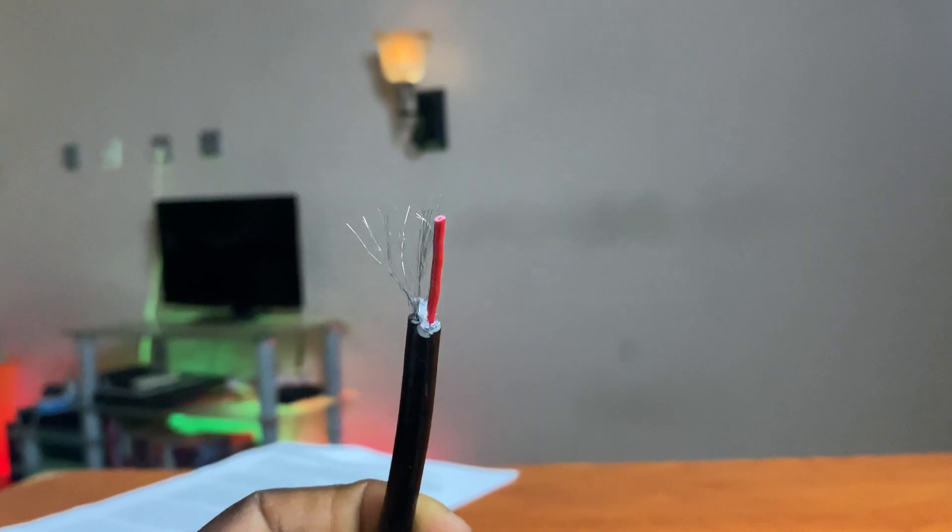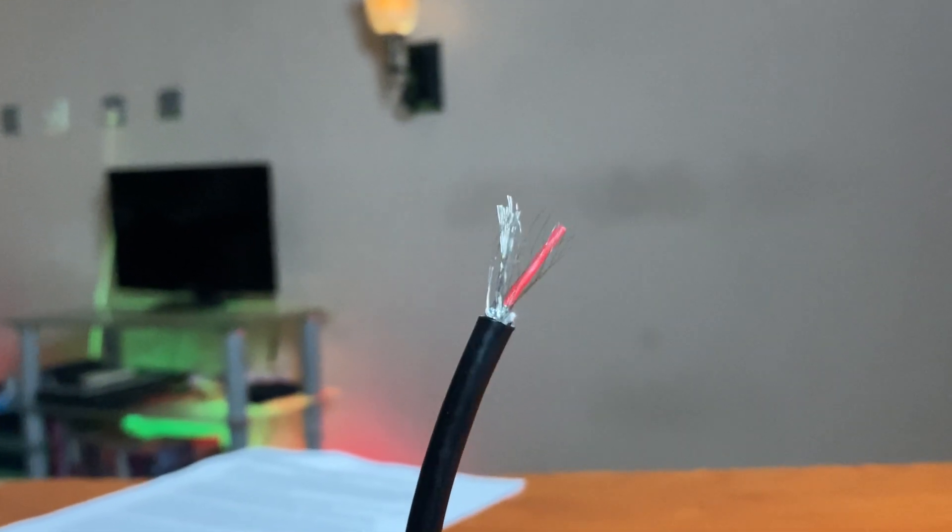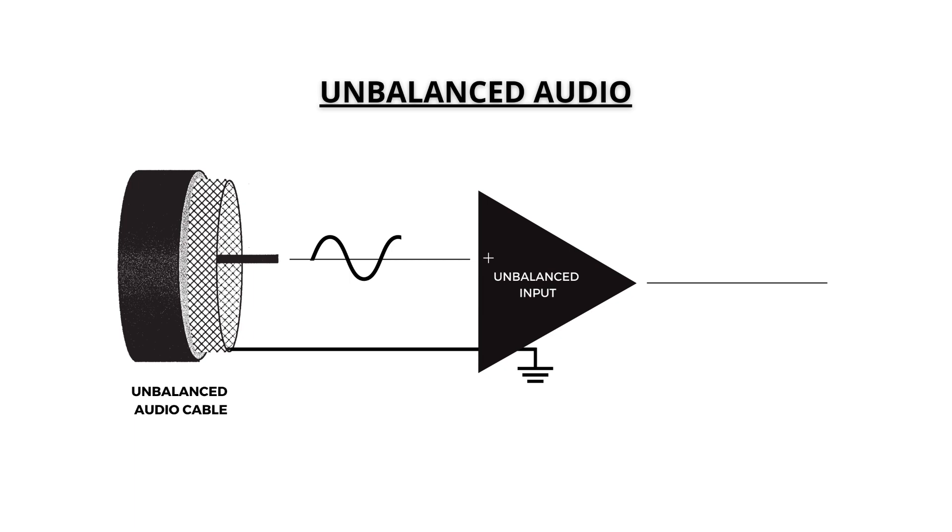Unbalanced audio involves the use of a single conductor plus shield. The conductor carries the audio signal from the transmitting device—let's say the output of a microphone—to the receiver. The receiver in this case might be the input of a mixer or an audio interface. The shield connects to ground while also acting as the negative conductor. This is very straightforward.